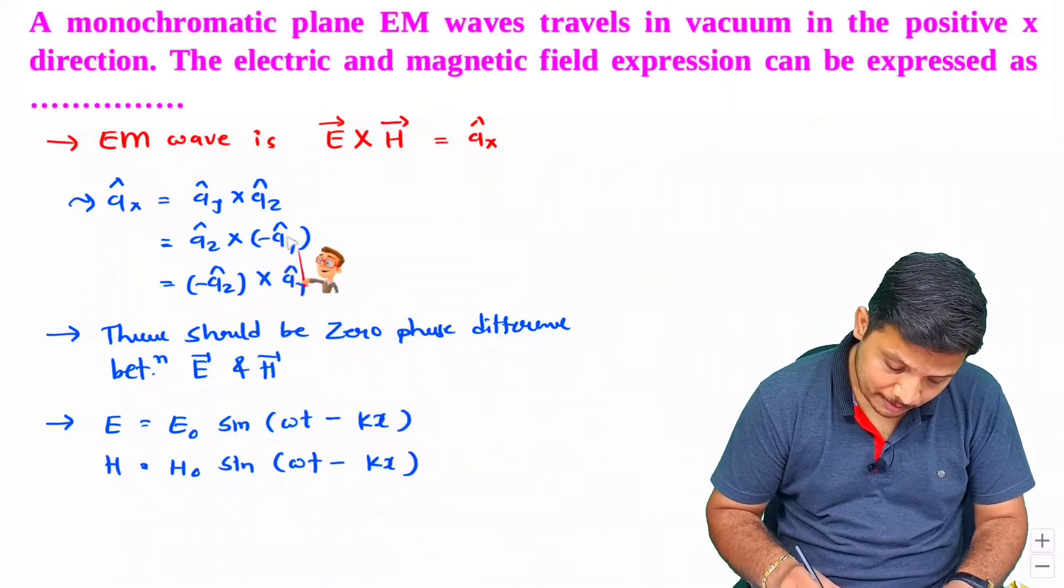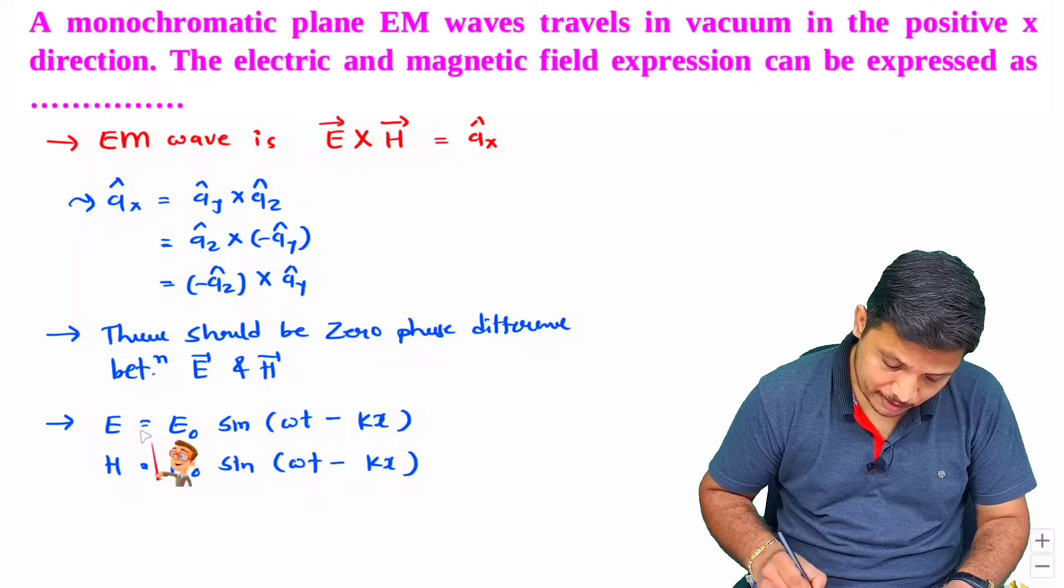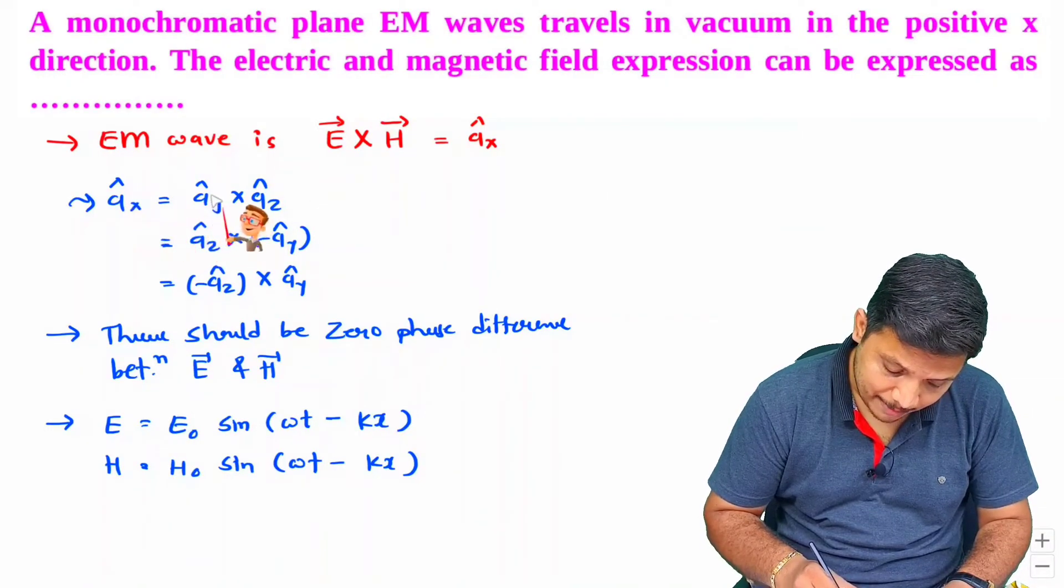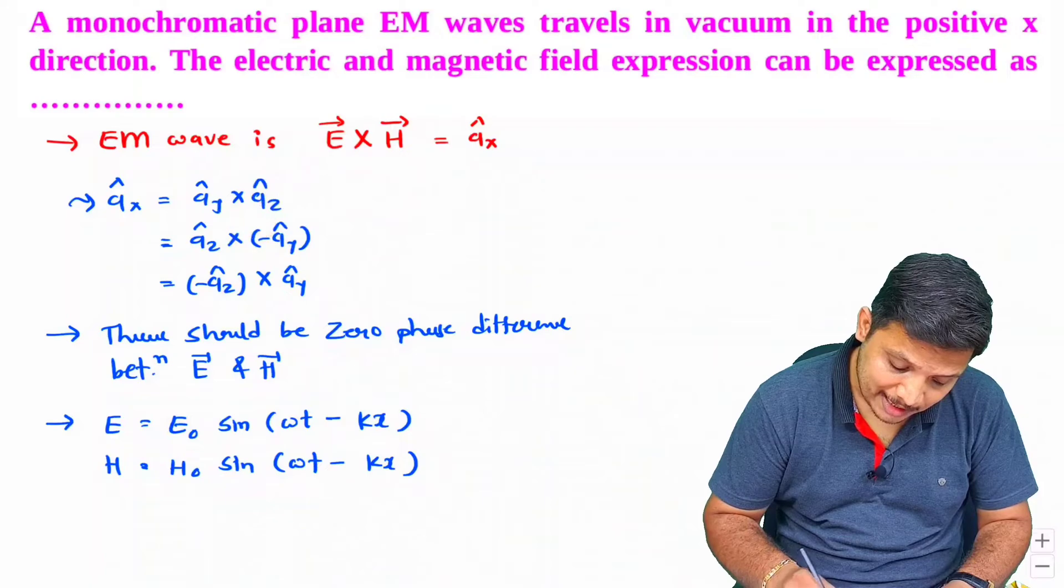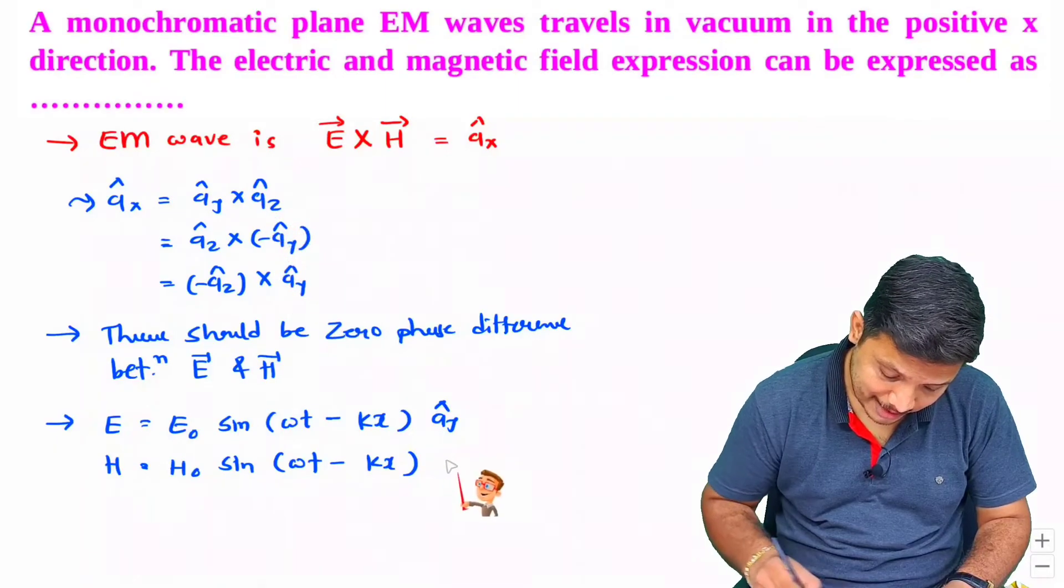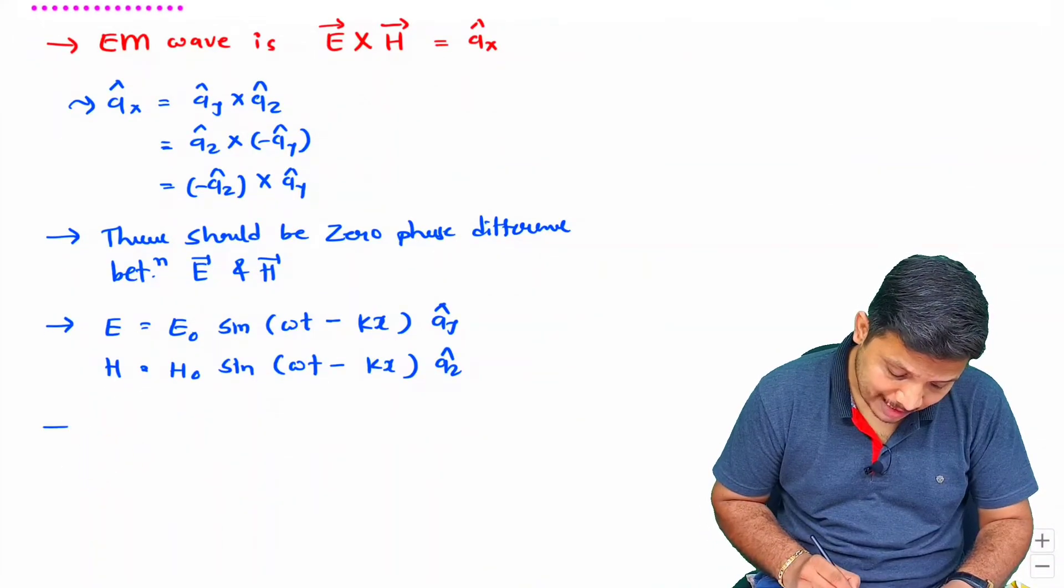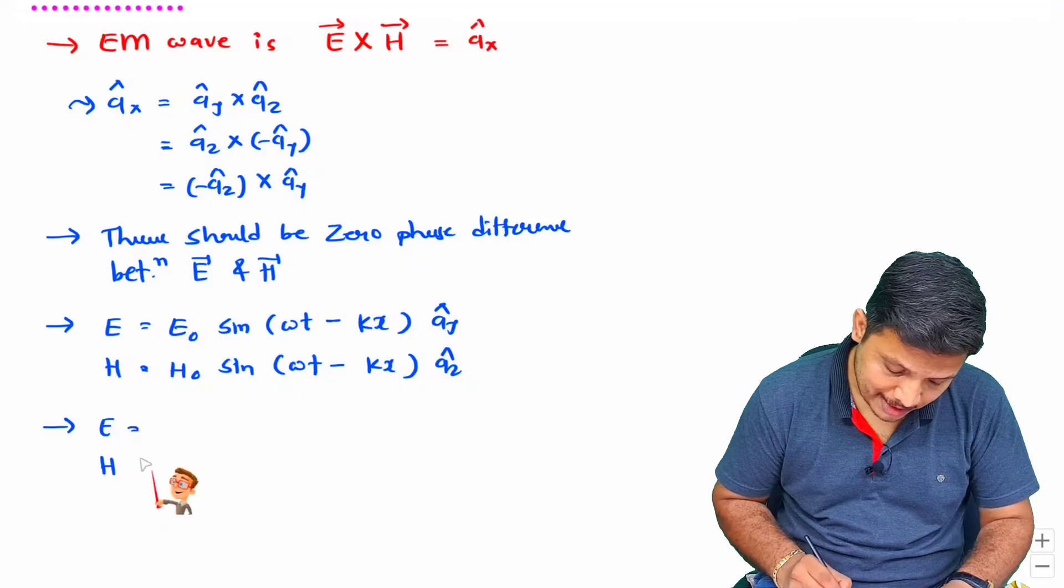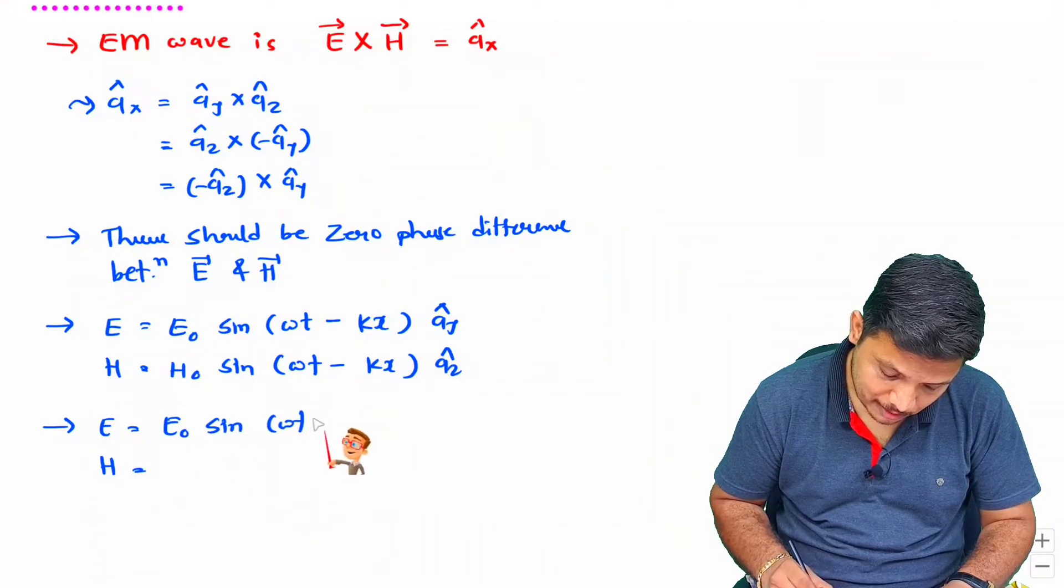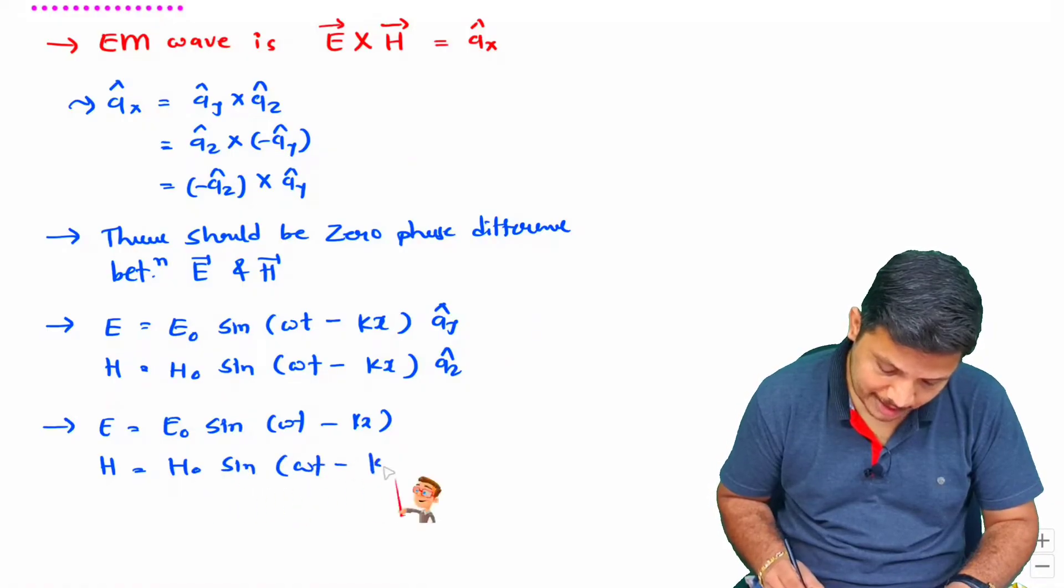Now here, you see what is given to us. So if Ay is negative, then here there will be negative sign. And if you see E cross H, it is like this. So in that case, if Ax is happening as per Ay cross Az, so here E is Ay and H is Az. E₀ sine (ωt - kx) and H₀ sine (ωt - kx).